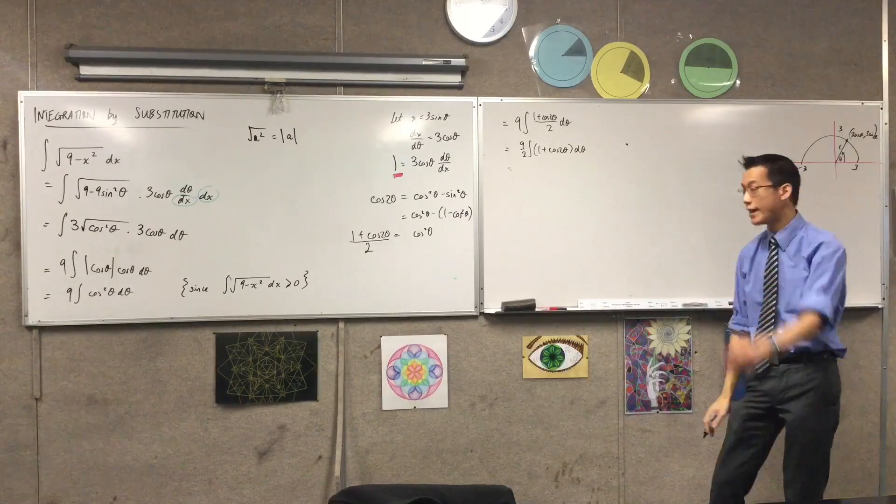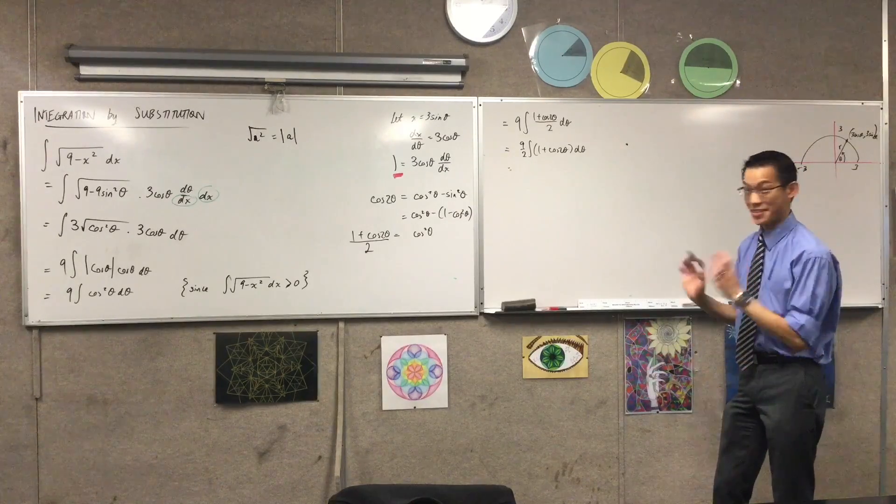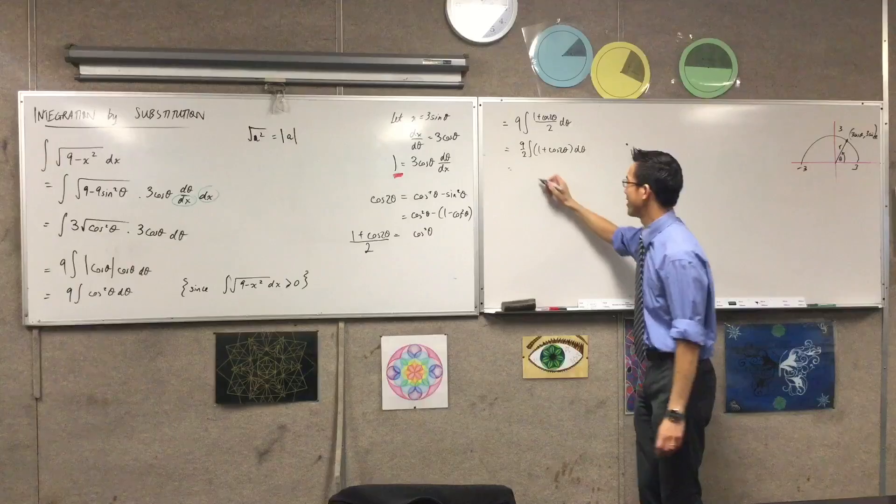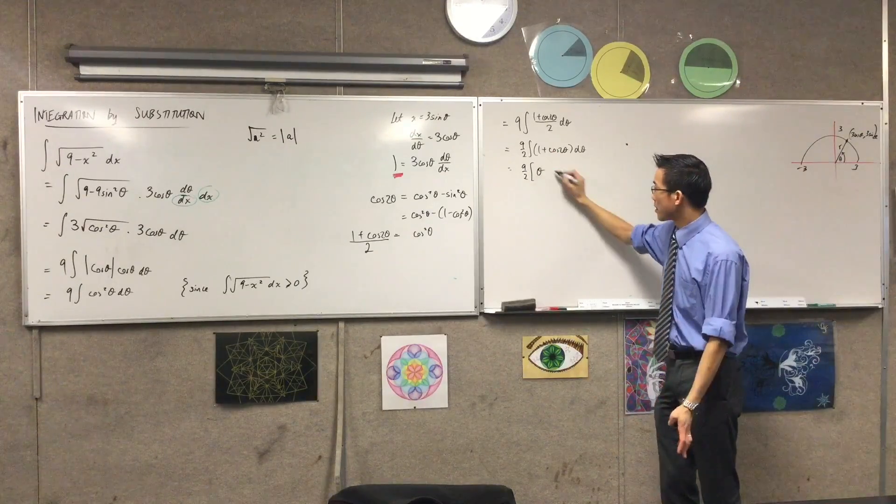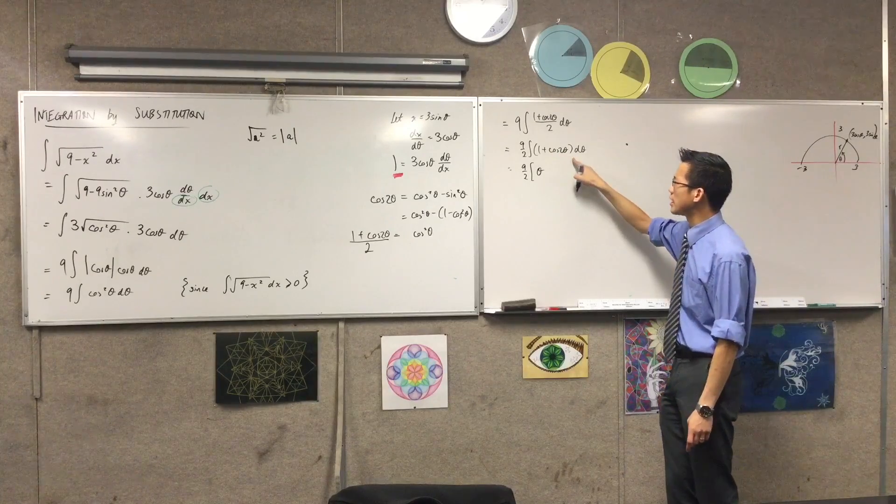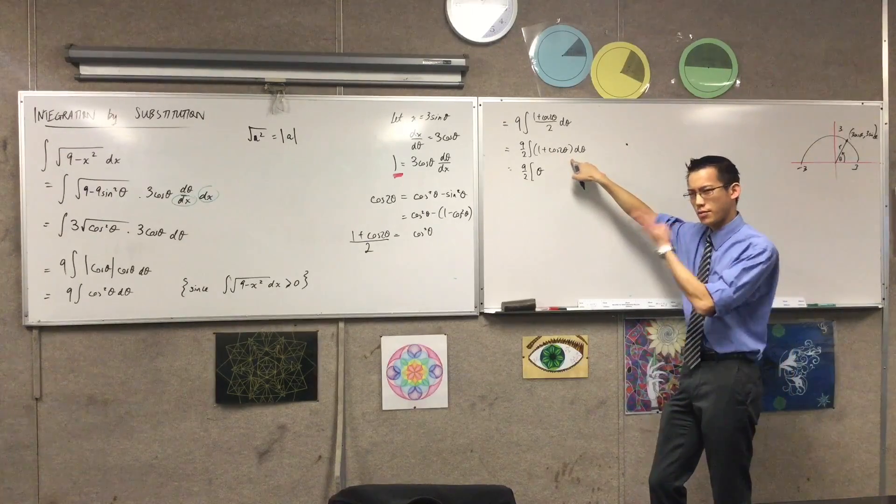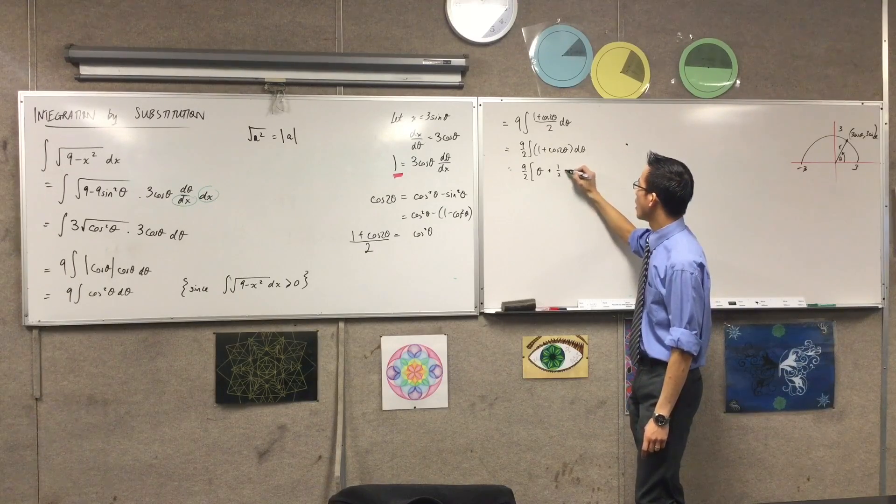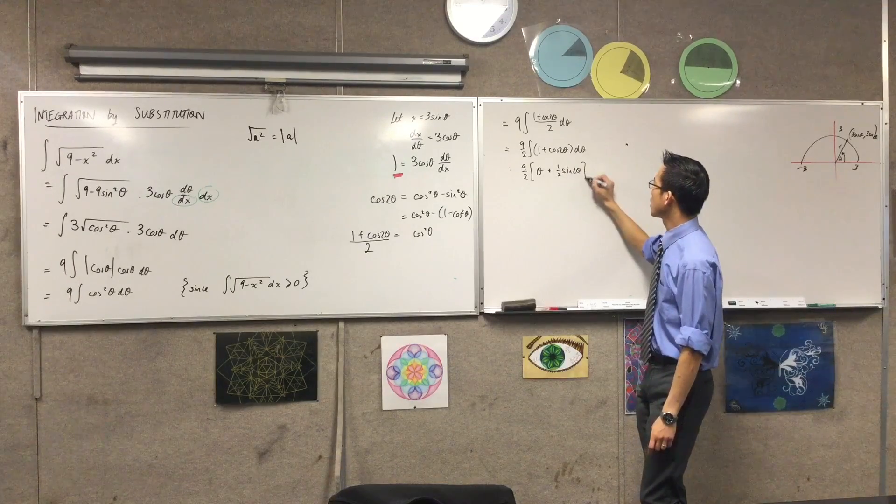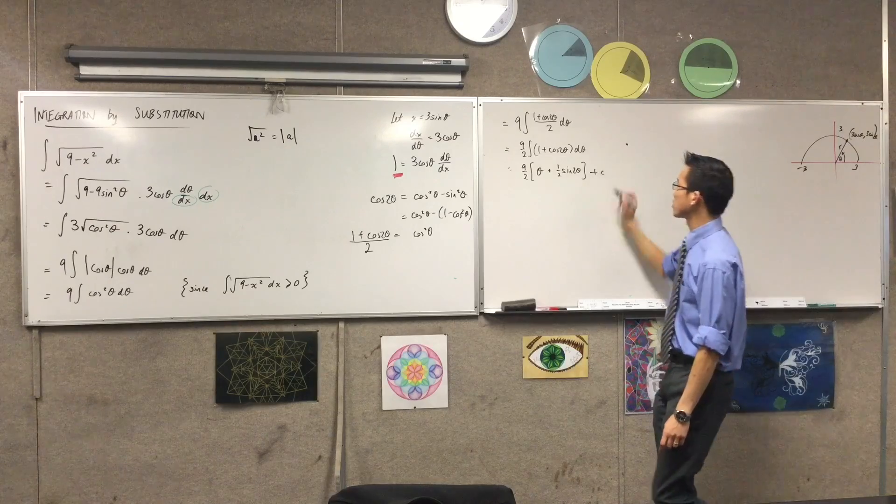Now I'm going to go ahead and I'm going to actually integrate now, because I can really do this. So I've got my 9 out of 2 out the front. 1, when I integrate it, becomes theta. Cos 2 theta is going to become, this is reverse chain rule, so this looks like it's going to be a half sine 2 theta. Plus a constant, because it's indefinite.